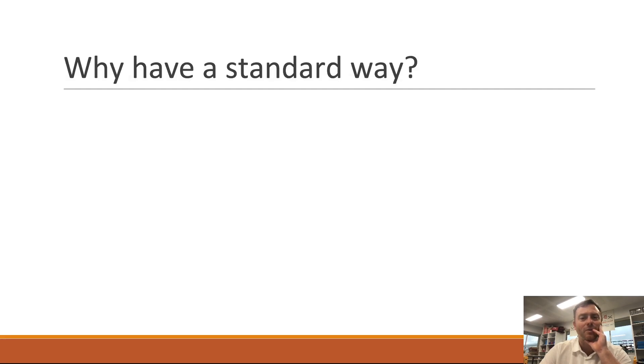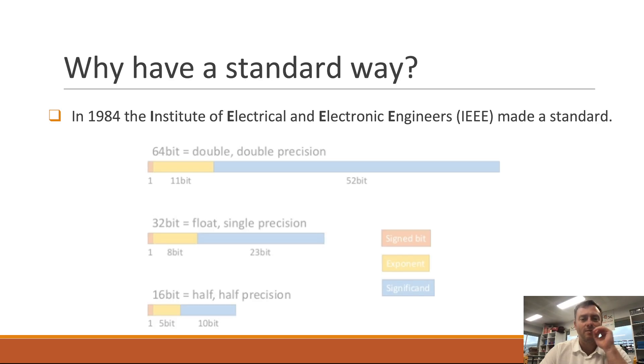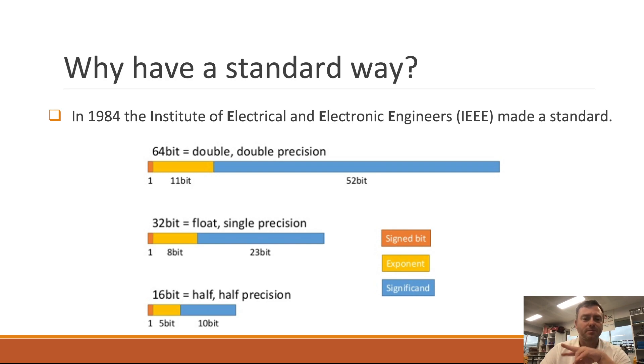So why have this standard way? Well, basically in 1984, the IEEE made up the standard so then other people could store decimal numbers. And what they found is pretty much in 32 bits, you could use this little algorithm and it's able to store numbers that are really complex.